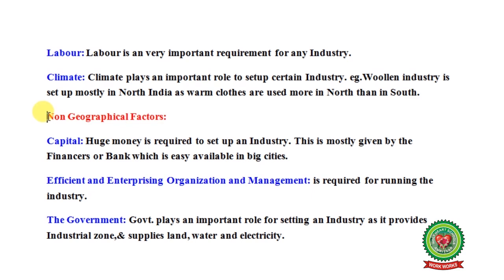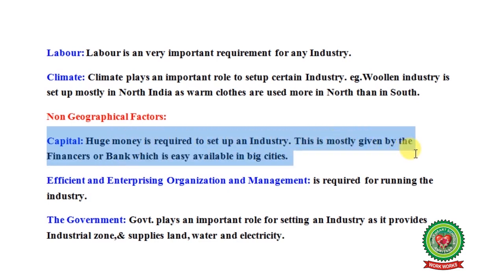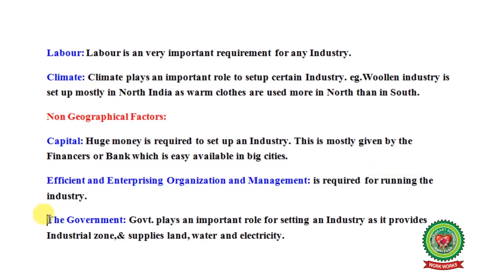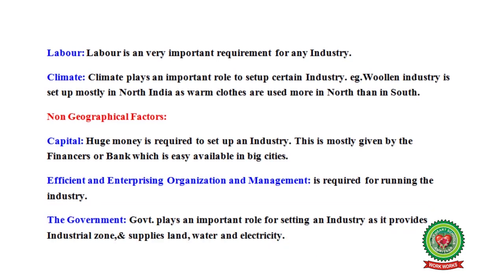Regarding non-geographical factors: first is capital — huge money is required to set up an industry, mostly provided by financiers or banks, which are easily available in big cities; that is why big factories are often set up near or in big cities. Efficient and enterprising organization and management are also required for running an industry. The government plays an important role by providing industrial zones and supplying land, water, and electricity. We will cover this in detail in the next lecture. Thank you very much.